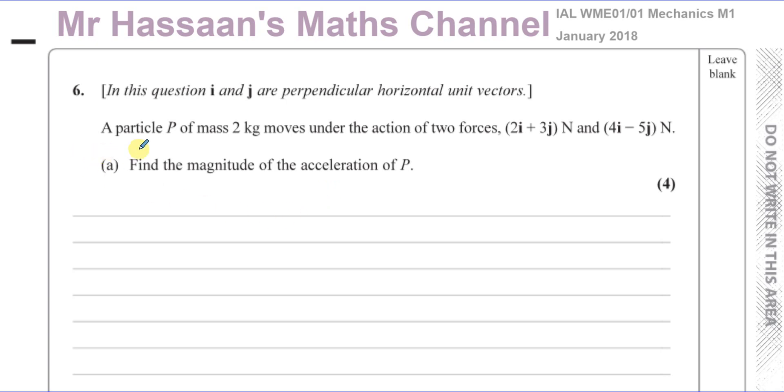We're told a particle P of mass 2 kilograms moves under the action of two forces. We have force 1, which is 2i plus 3j newtons. So I'll write it like this, 2, 3. I like to use column vectors in my calculations. And the second force F2, which is 4i and minus 5j. The top number represents i and the bottom j, so that's horizontal and vertical in your vector.